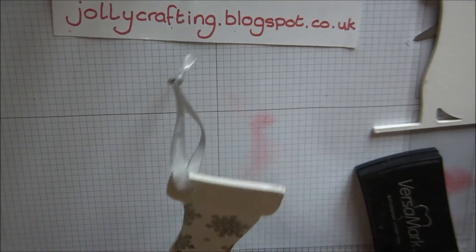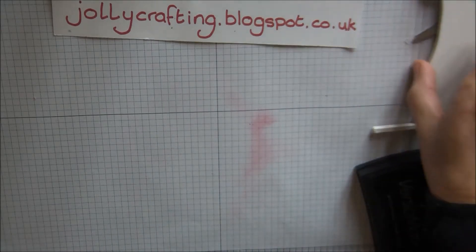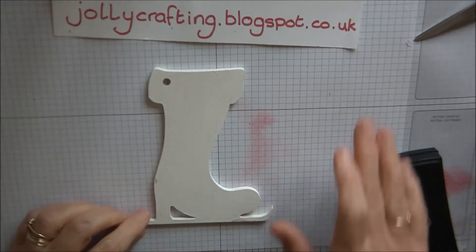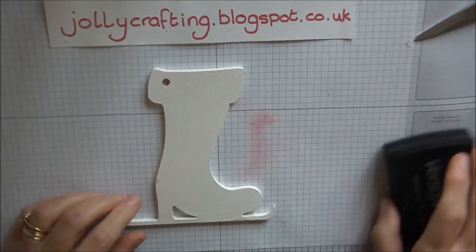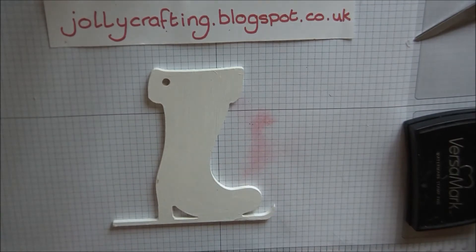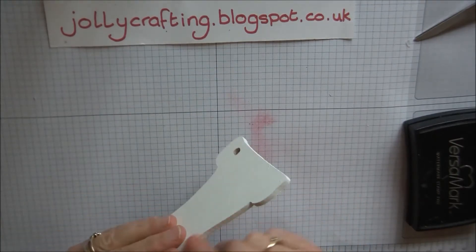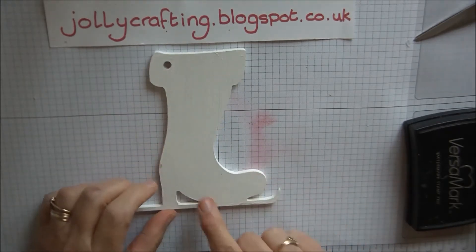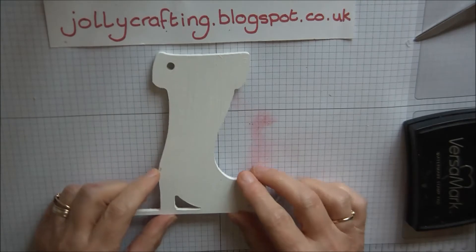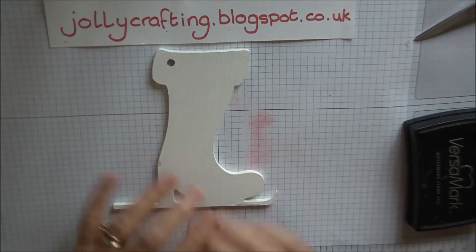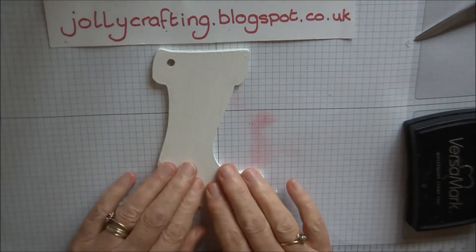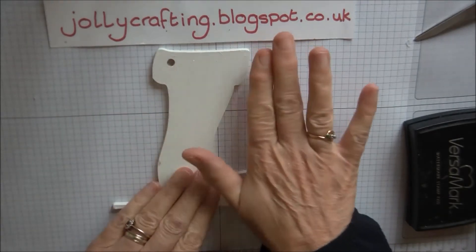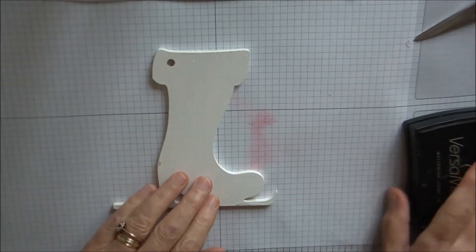First of all, I'm sure you've seen my other Stampin' Up or MDF YouTube videos. You would need an MDF cut out boot, and as you can see I've painted it on both sides. I've just used a matte emulsion paint for this. When you use the heat tool it doesn't bubble or anything like that, so don't be frightened of that.